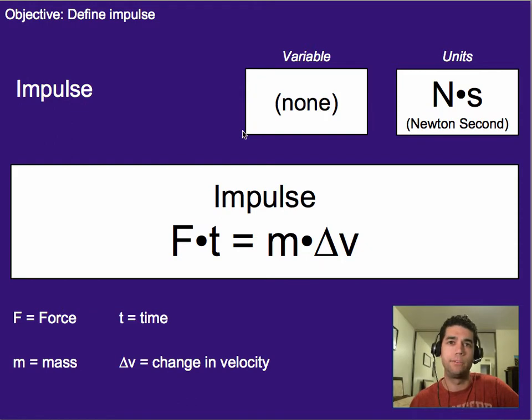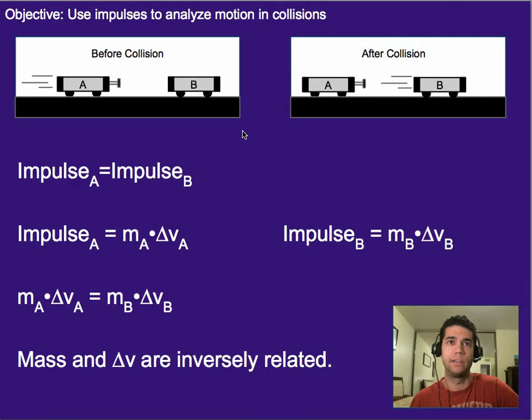So, little reminder, impulse is force times time, and it's equal to mass times your change in velocity. So, if we're looking at this collision again, then if we know the impulse of A equals the impulse of B, and both those impulses can also be described as mass times the change in velocity for those objects, then we can set those two things equal to each other.